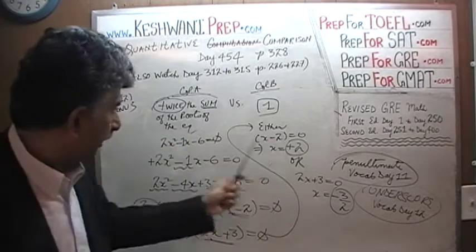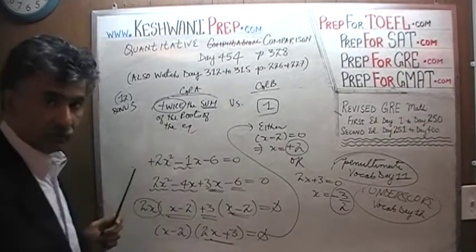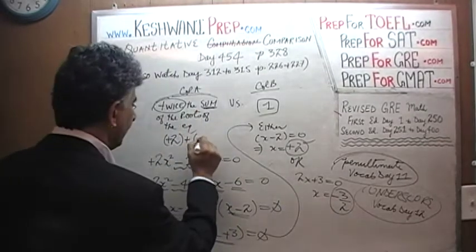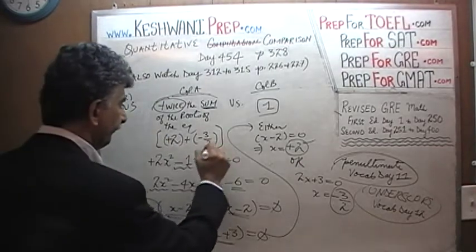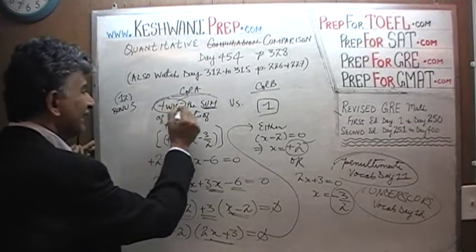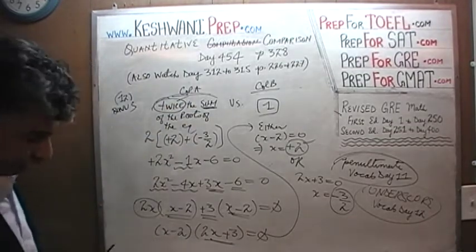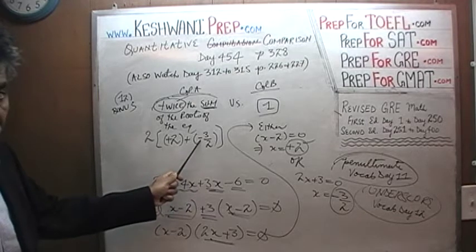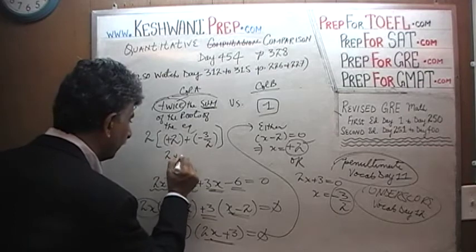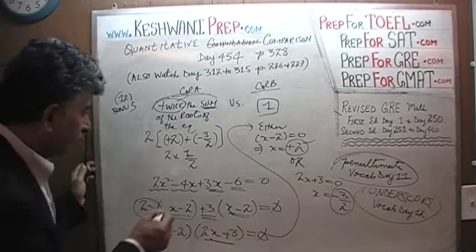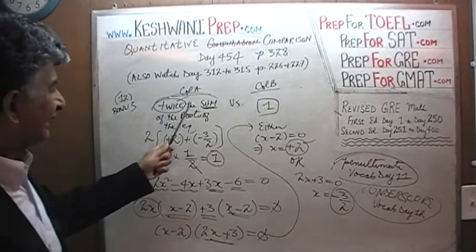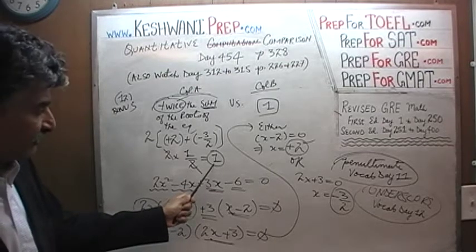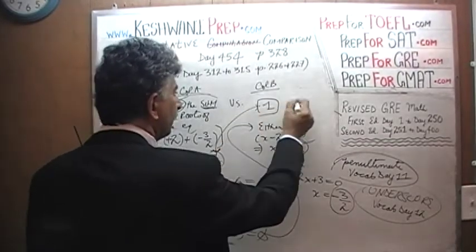Now we find twice the sum of the roots. The sum of the roots is positive 2 plus negative 3 halves. Two minus 1 and a half is one half. Twice the sum is 2 times one half — the 2 cancels — and it turns out that twice the sum of the roots equals exactly 1, which is exactly what column B gives us. Therefore the answer again is C.